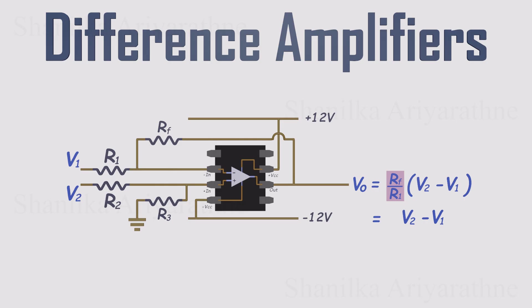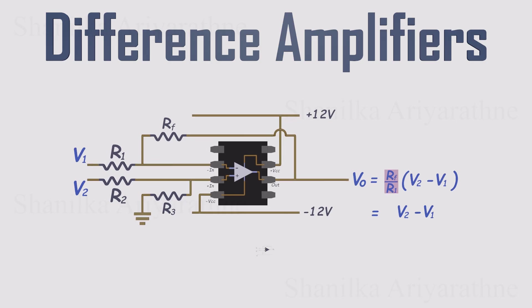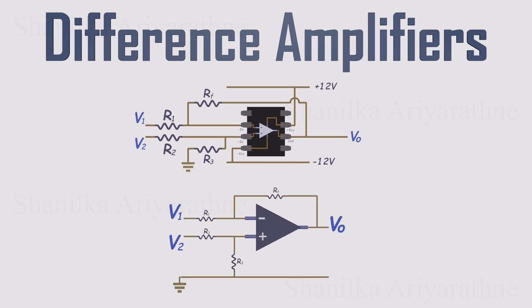Sounds almost too simple, right? Let's prove it by walking through the fundamentals. We'll strip away the fluff and keep only what really matters. In the schematic, we won't bother drawing the dual power rails, just to keep things neat, but remember, they're always there in the real circuit.